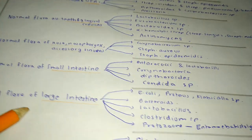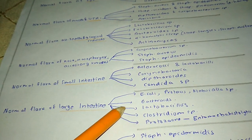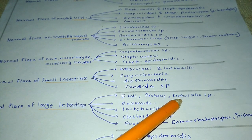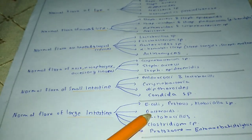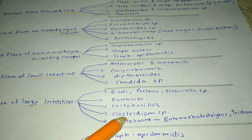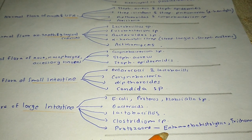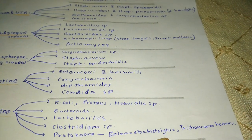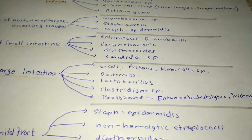The normal flora of the large intestine consists of E. coli, Proteus, Klebsiella species, Bacteroides, Lactobacillus, Clostridium species, and protozoans like Entamoeba histolytica and Trichomonas hominis.